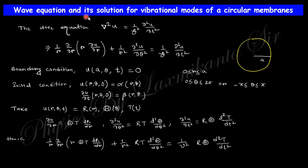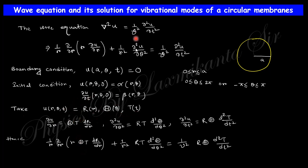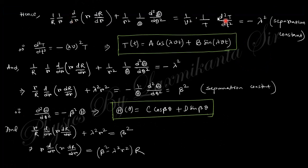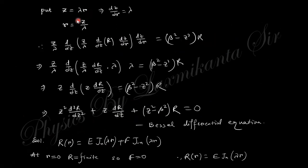Next is the wave equation and its solution for a circular membrane. For circular symmetry, the Laplacian operator is written in polar form. The boundary condition is that at the boundary the displacement is zero, and initially the displacement and velocity are constants. Taking the PDE solution as a function of r, θ, and t, and substituting the partial derivatives, the time part is separated out with a separation constant. The θ solution is also separated out, and with the substitution z = λr, the remaining equation in r is rearranged.